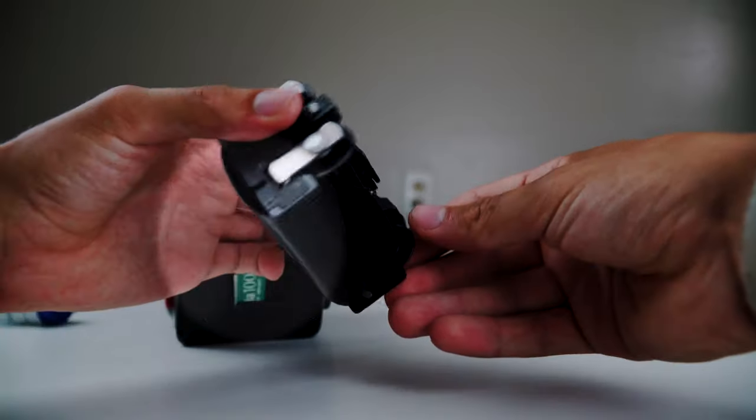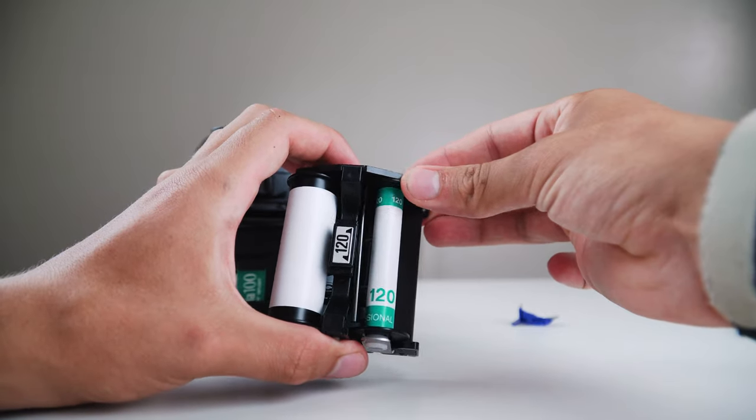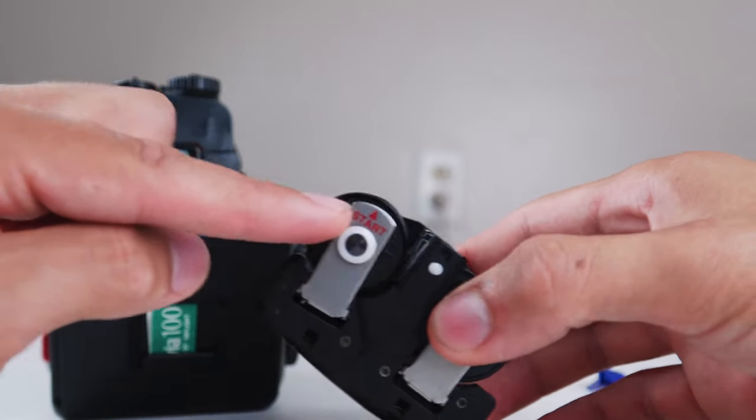As you roll, the film should tighten. If it's not, you probably need to start over. You want to keep rolling the film until the start on the little metal flap lines up with the start on the film.